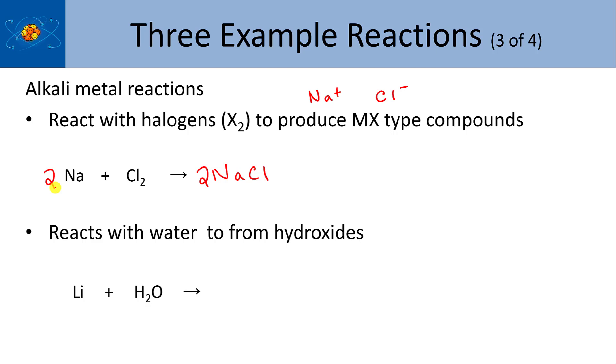So that's an example of an alkali metal reaction with halogens. It can also react with water to form hydroxides. Typically, the reaction looks like this, lithium hydroxide, like this, because, for example, lithium as an ion makes Li plus.